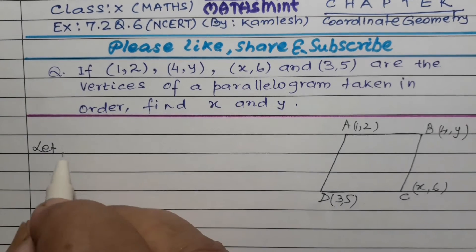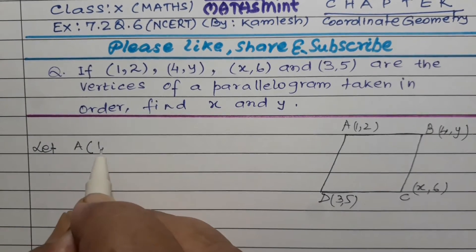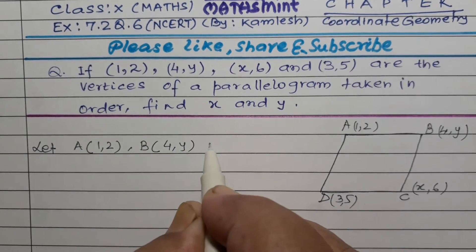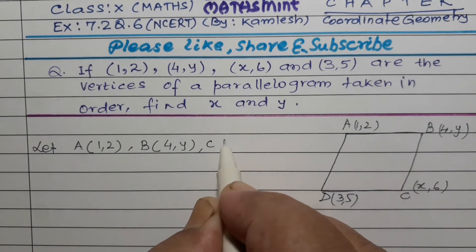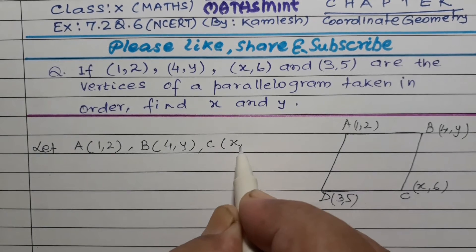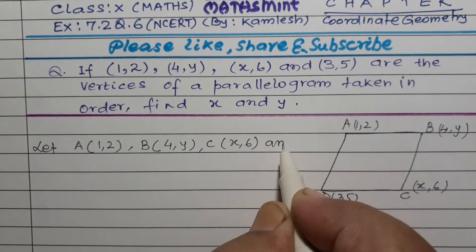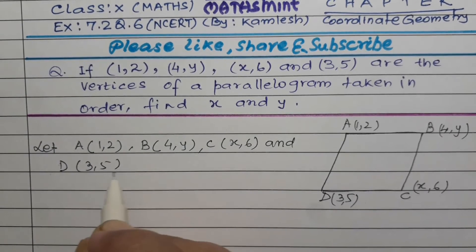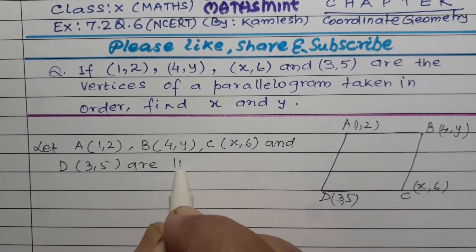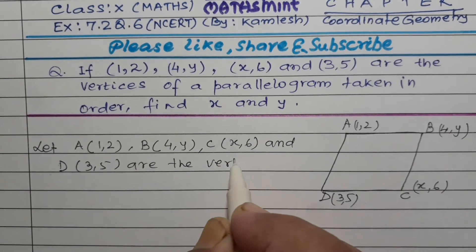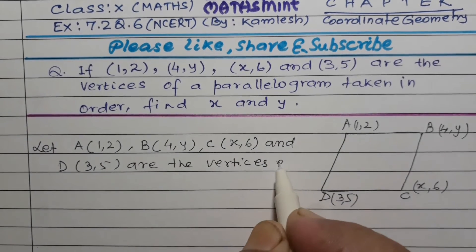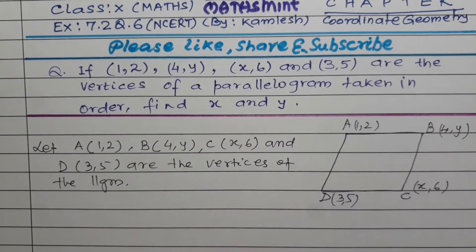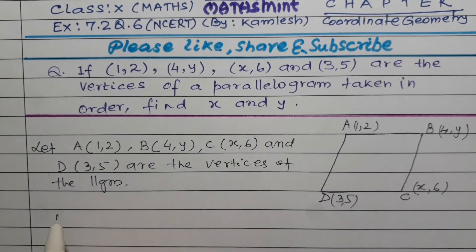Let A(1,2), B(4,y), C(x,6) and D(3,5) are the vertices of the parallelogram.